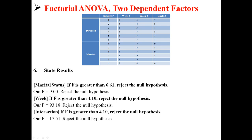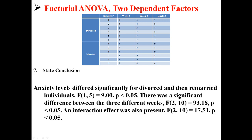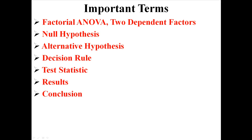Now we state our results. For marital status, we reject the null hypothesis because F = 9, which exceeds 6.61. For week, we reject the null because F = 93.18, which exceeds 4.10. For the interaction, we also reject the null because F = 17.51, which exceeds 4.10. Our conclusion is that anxiety levels differed significantly for divorced versus remarried individuals, there was a significant difference between the three weeks, and an interaction effect was also present. That was a factorial ANOVA with two dependent factors.